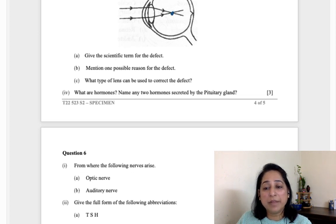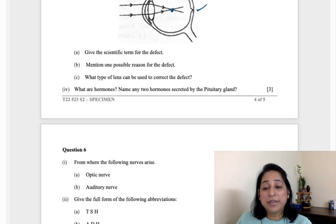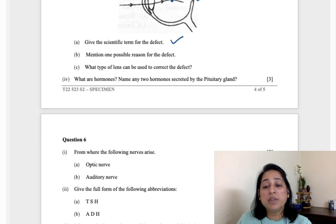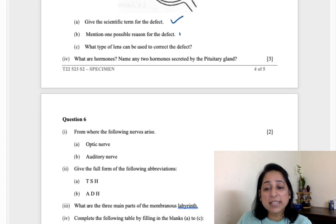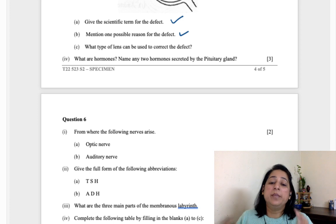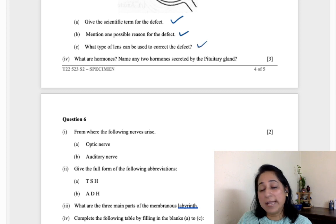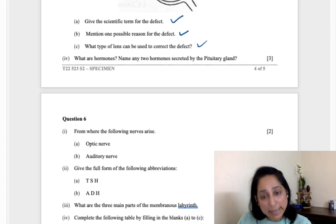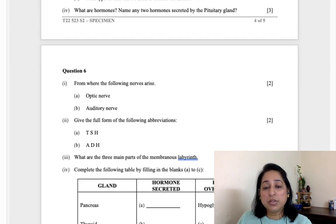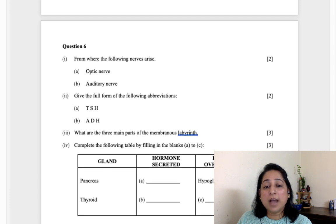Given below is the diagram depicting an eye defect. If the image is forming here, away from the yellow spot, that is myopia. Mention one possible reason - the reason is that the lenses become too elongated, so the focusing becomes different. Types of lens which is used to correct this - the lens which is used is concave lens.